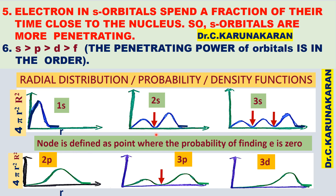What is called a nodal point? In the radial probability function, a node is defined as a point where the probability of finding the electron is zero. For the 3p orbital there is only one node; for the 3d orbital there is zero node. From these plots, these are the observed features.